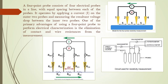The 4-probe setup or 4-point probe consists of 4 electrical probes which are collinear and equally spaced. The outer probes carry the current, and the voltage is measured between the two middle probes — that is, the inner probes. The probes are numbered 1, 2, 3, and 4. Current flows between probes 1 and 4, and the voltage drop is measured between probes 2 and 3.